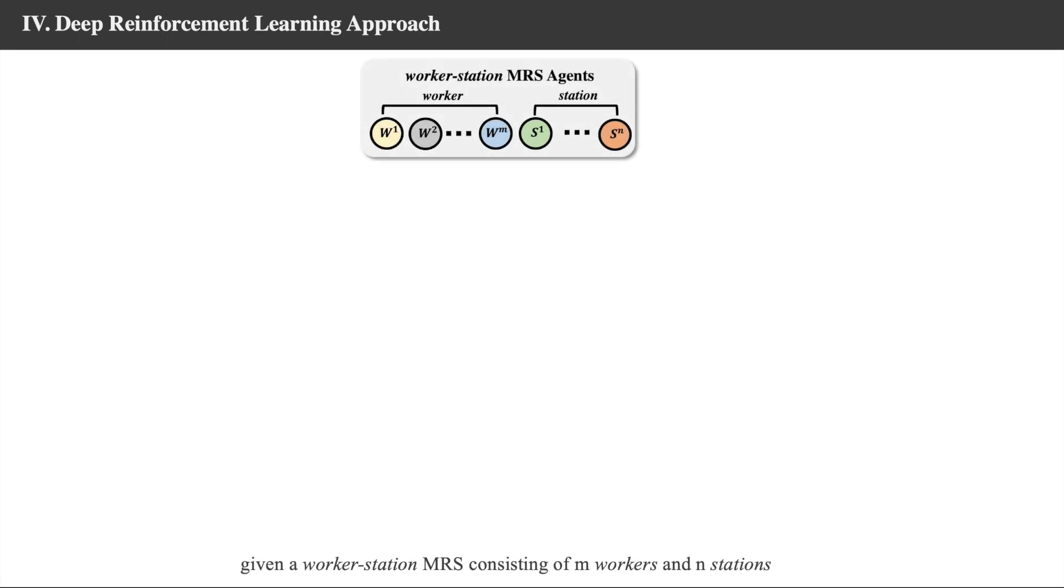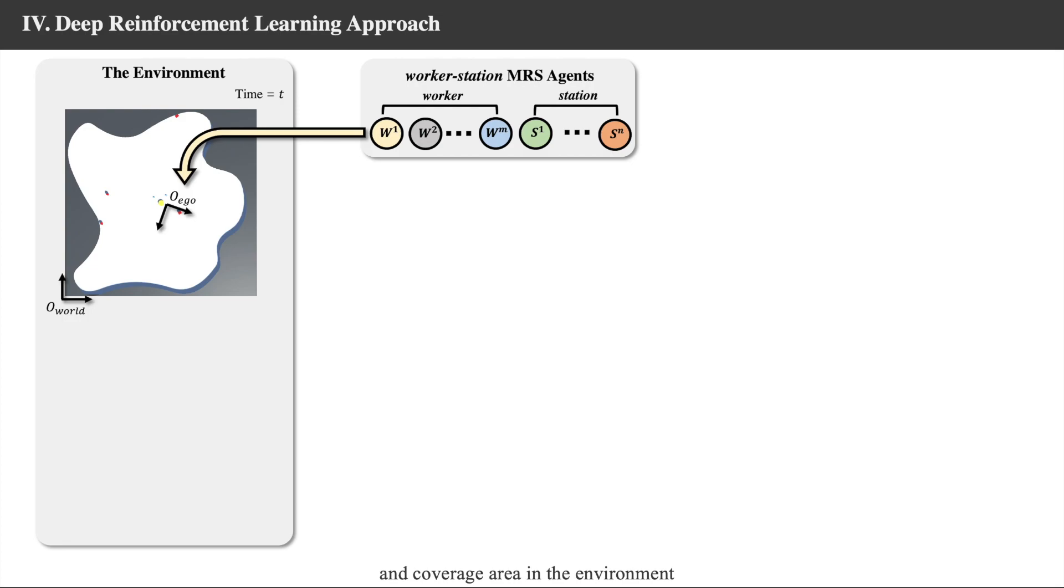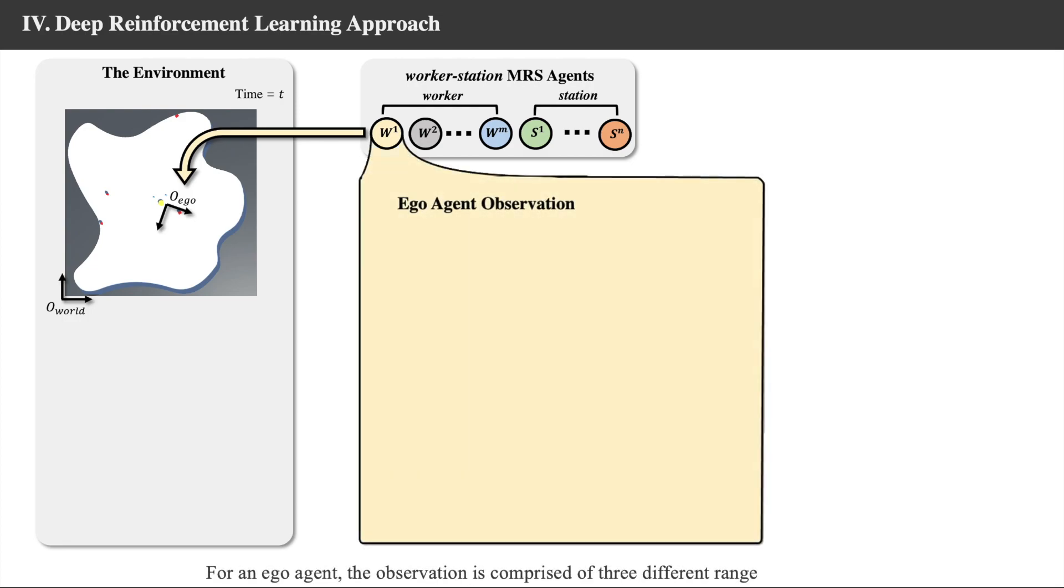Given a worker station MRS consisting of M workers and N stations, and coverage area in the environment. For an ego-agent, the observation is comprised of three different range. First, zero-range observations are stacked.